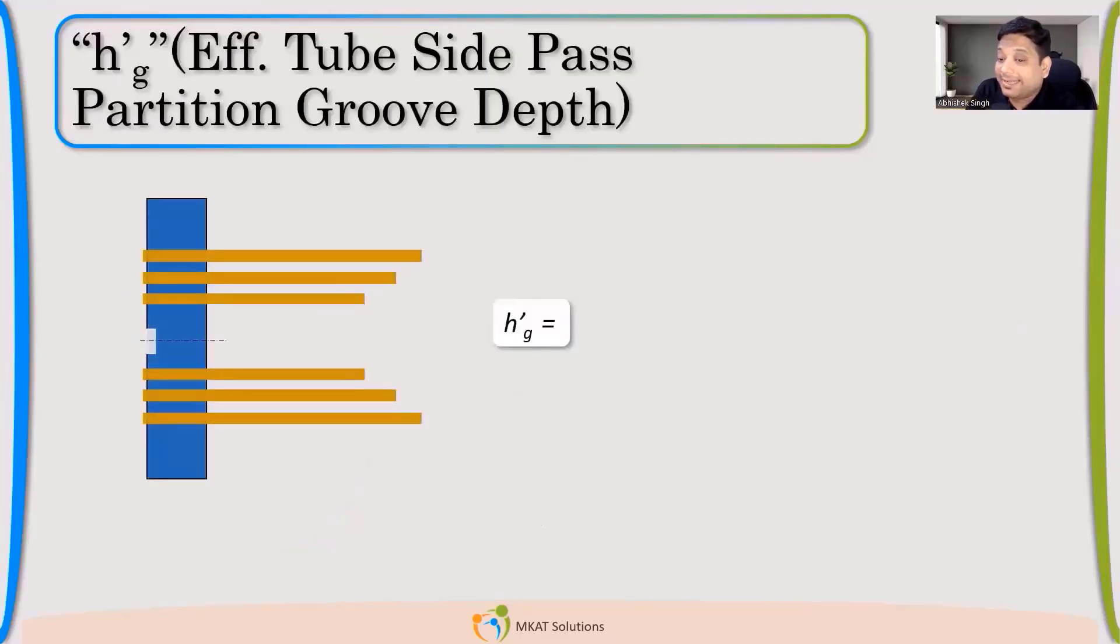Now, what is H'g? We are trying to calculate the effective dimension because we will be using them. We are trying to find the equivalent dimensions when there are tubes in place. So H'g, the definition is effective tube side pass partition groove depth. H'g is the pass partition groove depth.